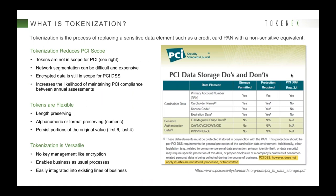Just to make sure we're working from a common definition: tokenization is the process of replacing sensitive data — in this case, a credit card PAN — with a non-sensitive equivalent. Tokens are not in scope for PCI; you can't use a token to make a fraudulent transaction. Tokenization is important because network segmentation is often difficult and expensive. Many customers we interact with still have flat networks, and implementing segmentation on a flat network can be difficult, if not impossible, and certainly an expensive proposition.